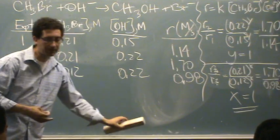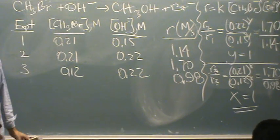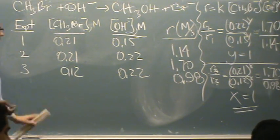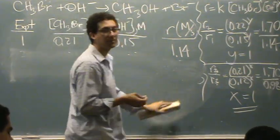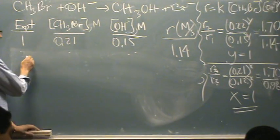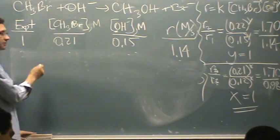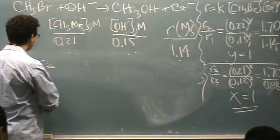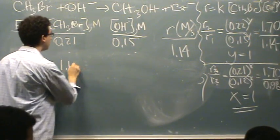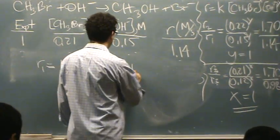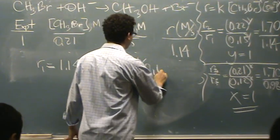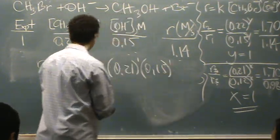For the last part, I'm just going to pick whatever your favorite rate is. It doesn't matter. I'll pick 1. 2 and 3 will also give you the same answer. And this has to be done after the order is done. Rate 1 is equal to 1.14. That's K times 0.21 to the 1, 0.15 to the 1.